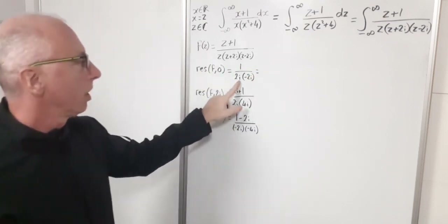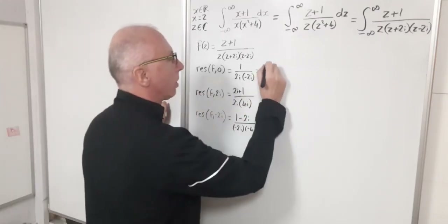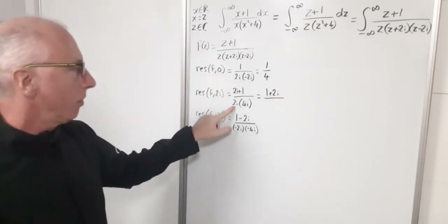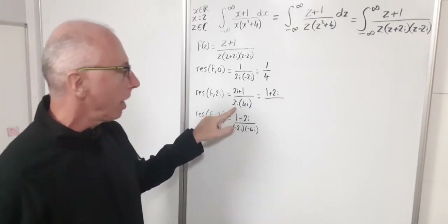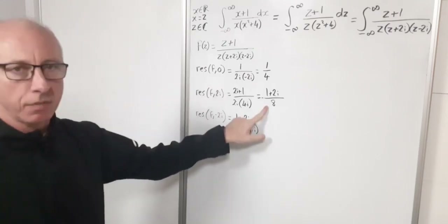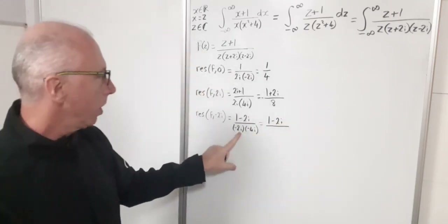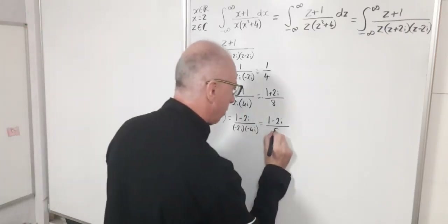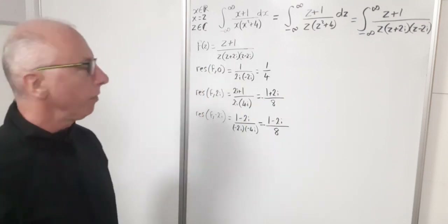Simplifying each residue: for z=0, 2i times -2i gives 4i²= -4, and multiplying by another -1 from the negative gives +4, so the residue is 1/4. For z=2i, the denominator 2i times 4i = 8i² = -8, so the residue is (1+2i)/(-8), which we write as -(1+2i)/8. For z=-2i, the denominator (-2i) times (-4i) = -8 as well, so the residue is (1-2i)/(-8), written as -(1-2i)/8.